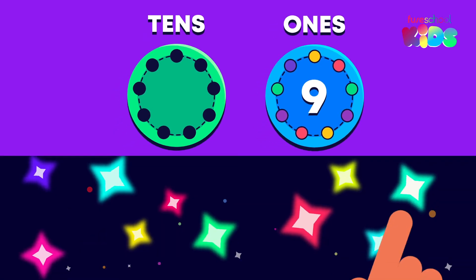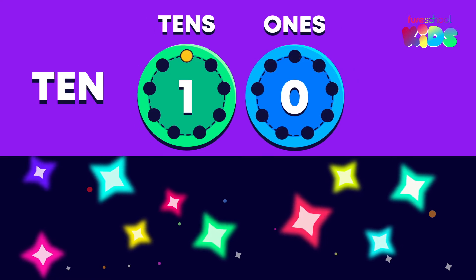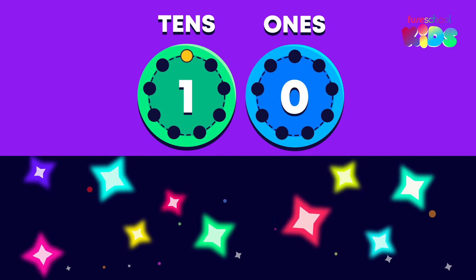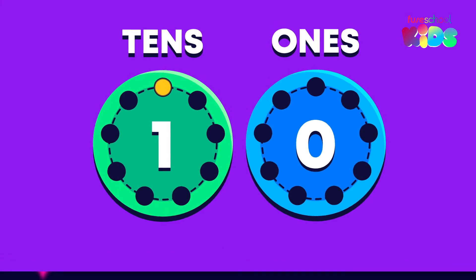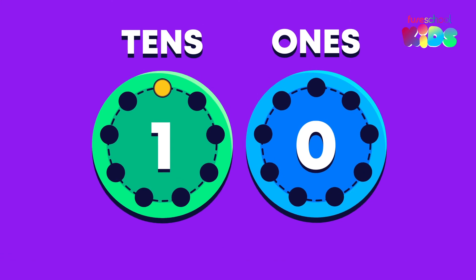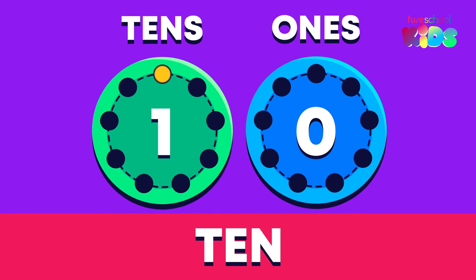Look, another star is flashing color. Do you know what comes after nine? That's right, it's ten. Ten is made up of two digits — a one and a zero. There is a one in the tens place; we have one ten. There is a zero in the ones place because we have zero ones.